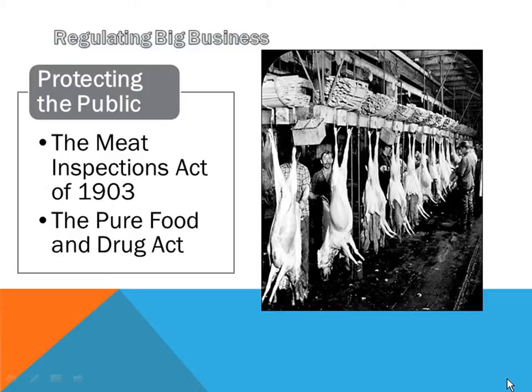Some of these cows may have had nasty infections — maybe open sores oozing pus. The Meat Inspection Act went into effect saying that certain guidelines must be met to prepare meat for consumption: they have to be inspected, they have to be healthy cows, and they can't have any visible illness.